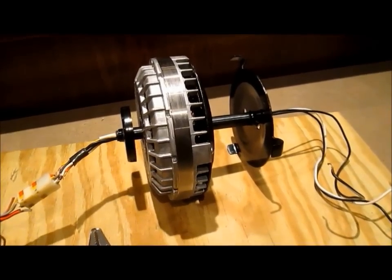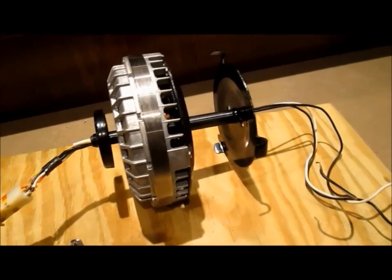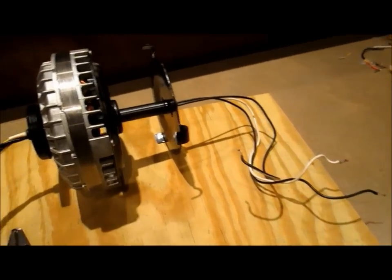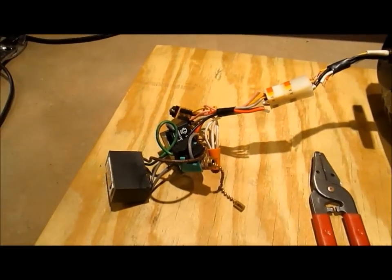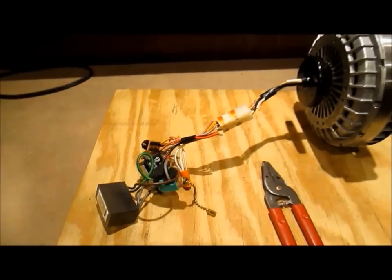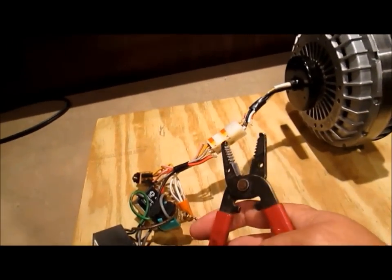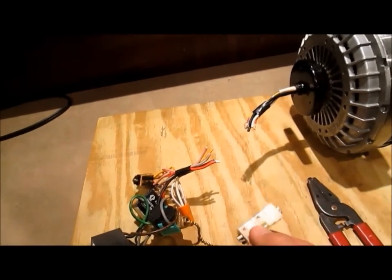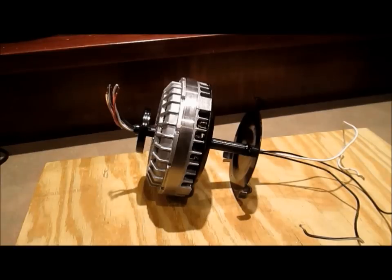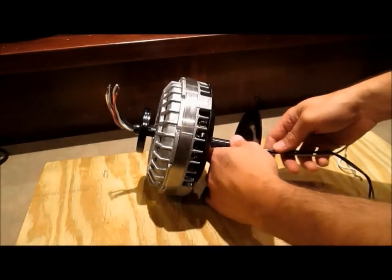Once you get the motor out of the fan, it should look like this. It has some power wires on this side and electronics on this side. And there's a connector here that holds it all together. I just took a wire cutters and cut both sides and took that connector out. If you pull here, the power wire should come right through.